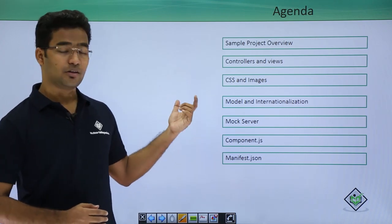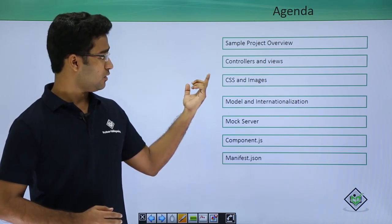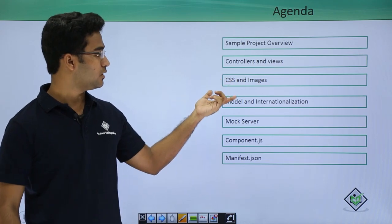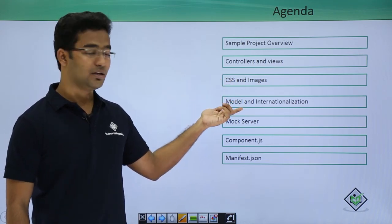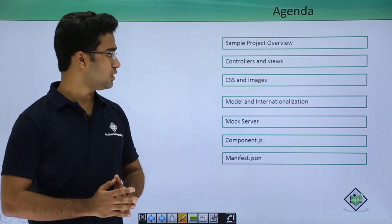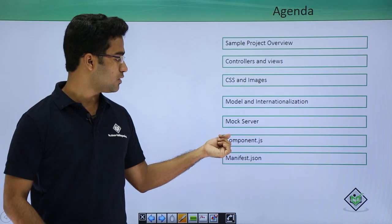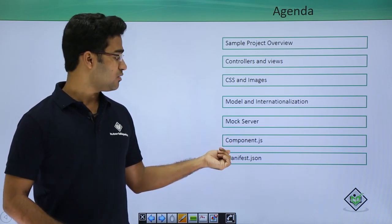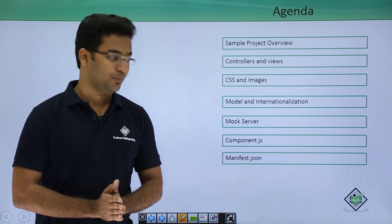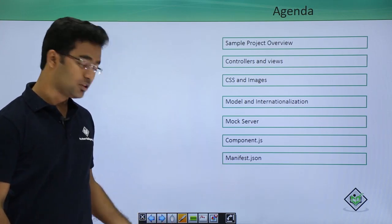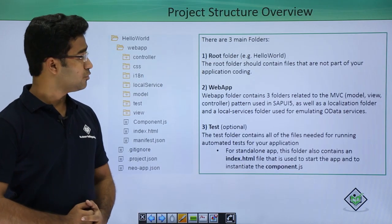We will see the concept of MVC — that is Model, View, and Controller — including what controllers and views are. Then we will cover CSS, how to implement CSS and images in our SAPUI5 project. We will also see models and internationalization, mock servers, how the component.js file helps us, and the application descriptor — the manifest.json file.